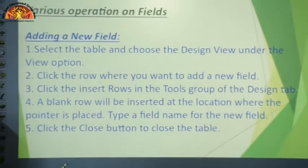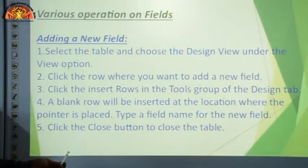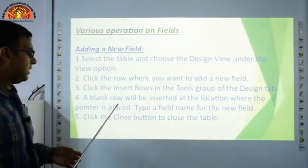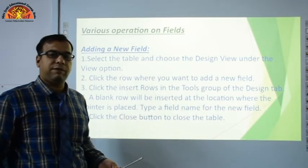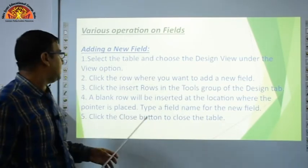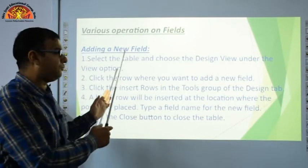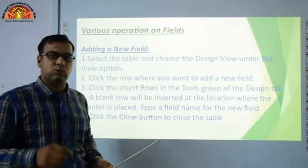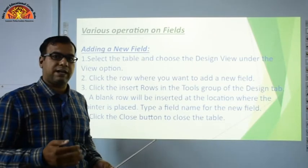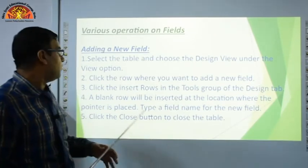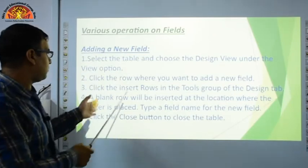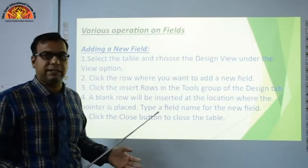Next is various operations on fields. First, adding a new field. Suppose you have fields: roll number, class, subjects, and marks, and you want to add an 'address' field. Follow these steps to add the new field.